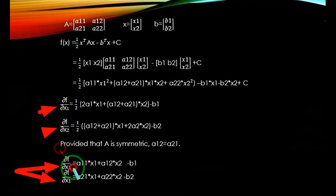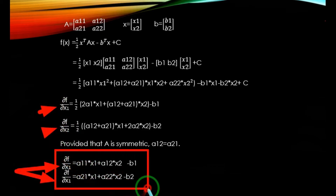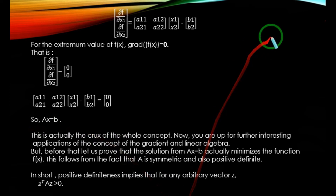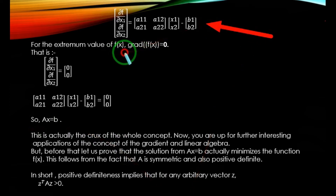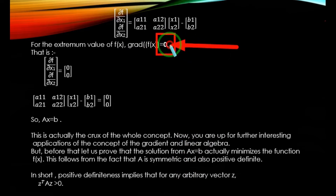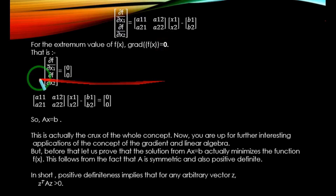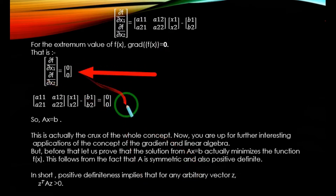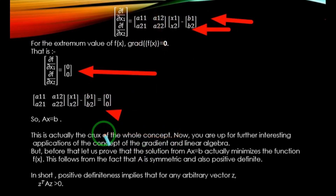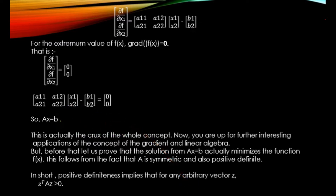Simply substituting A12 by A21, we get the following output. For the extreme values of f(x), the gradient of f(x) should equal zero. Since we are dealing with vectors and matrices, we equate the gradient of f(x) with a null vector — the bold 0 you are seeing is a null vector. Equating with the null vector and substituting the values, we get A·x = b, which proves that our previously mentioned extremization function works. This is actually the quirk of the whole concept.